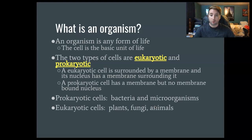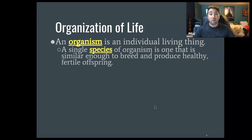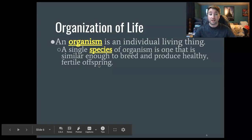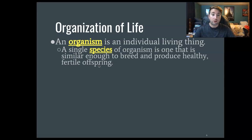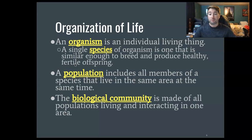So let's talk about the organization of life. One organism is one individual living thing. A single species is a group of animals, plants, or fungi that are so similar they can breed together and produce healthy fertile offspring — that fertile part is really important, because some cross-species offspring are actually sterile. A population includes all the members of one species that live in a given area at the same time. A biological community is when you take a ton of populations and put them all together, interacting within one general area.